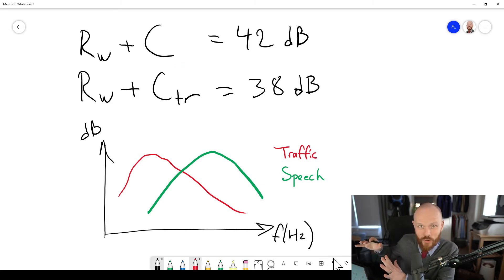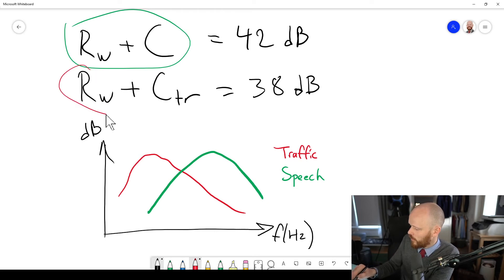But it does not work the other way around, because this green one, if it's good to stop the higher frequencies, low frequencies will have an easier time still getting through. And that is the reason why you will have a higher rating when you look at the RW plus C rating and compare it to the RW plus CTR rating.